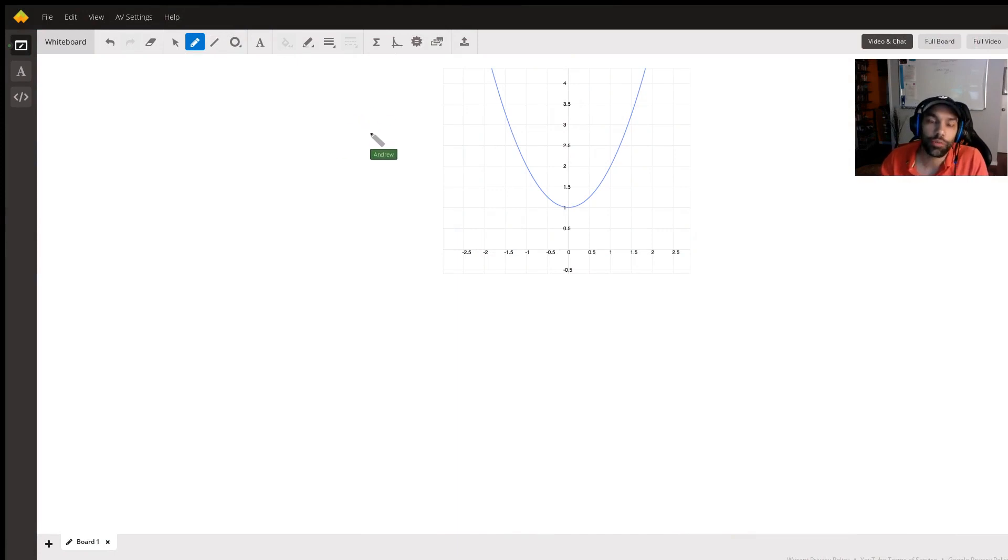All right, so for this problem we're asked to approximate the area underneath the curve given by the function f(x) = x² + 1. We're asked to approximate it using the left endpoints of six subintervals, and we're asked to do that from x = -1 to x = 2, so from negative one to two.